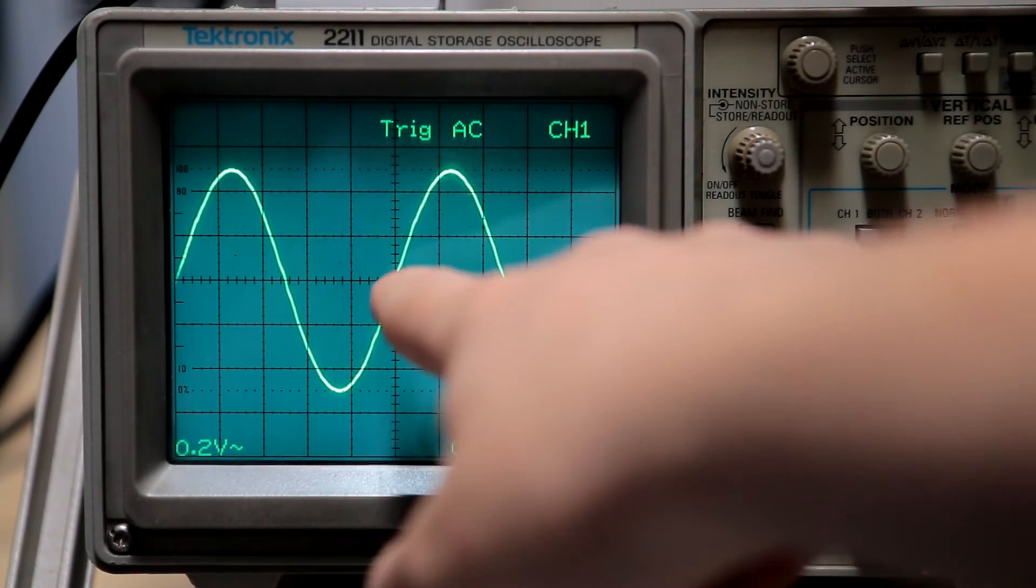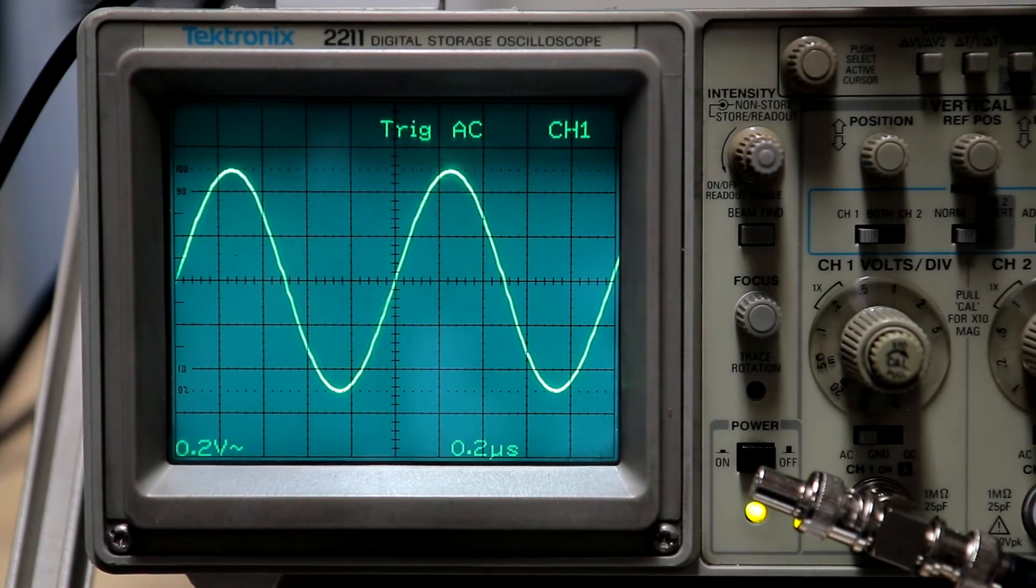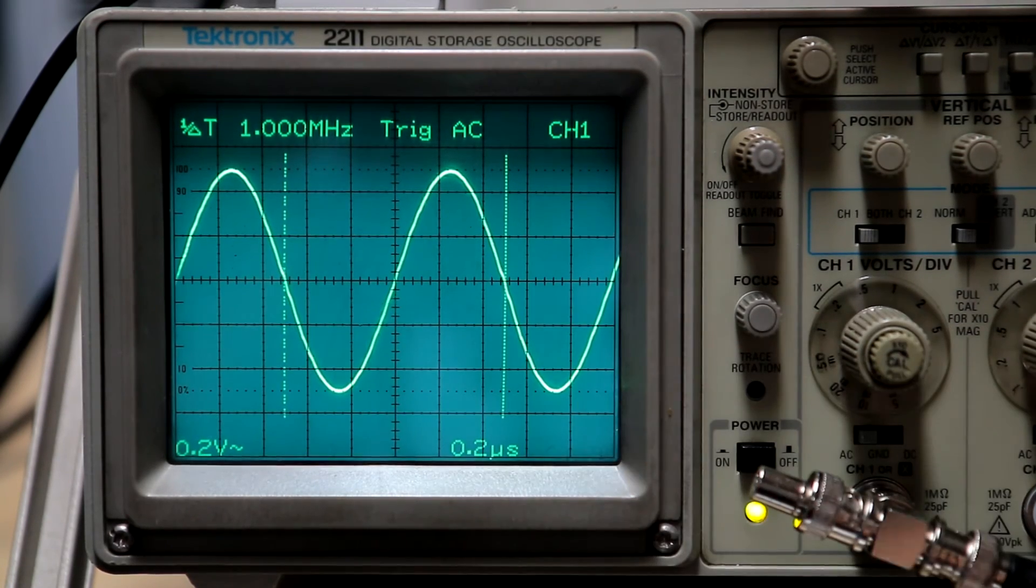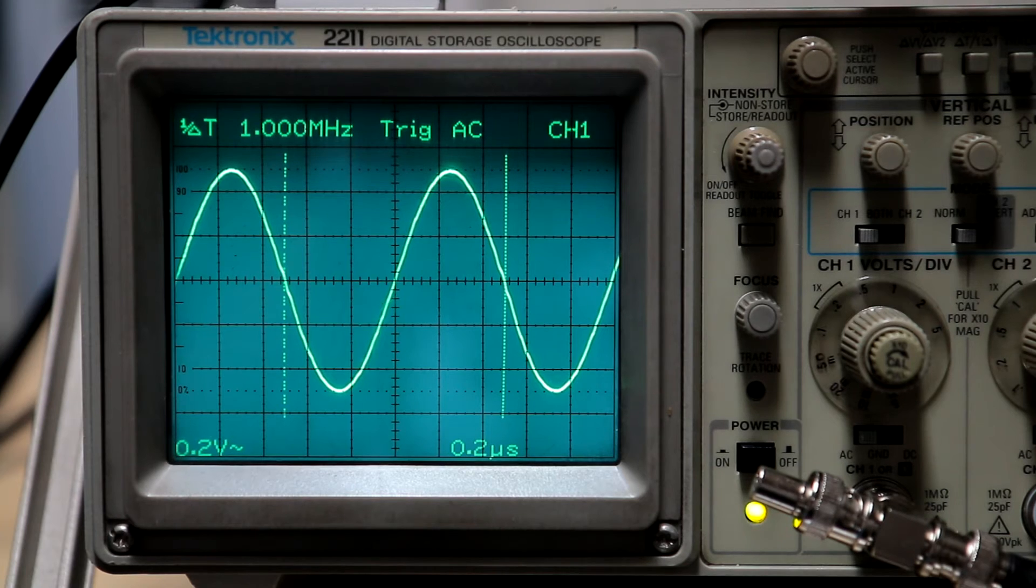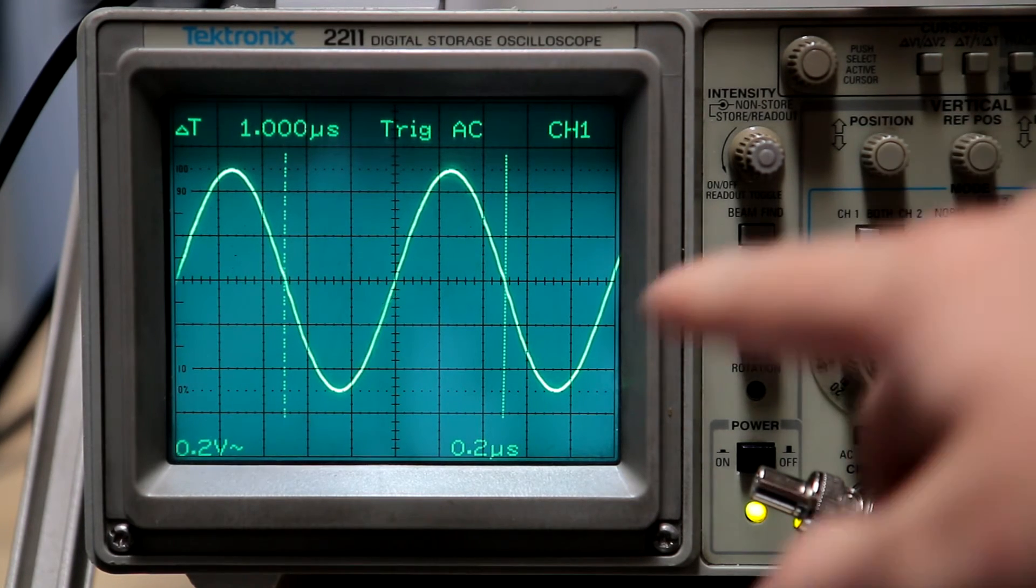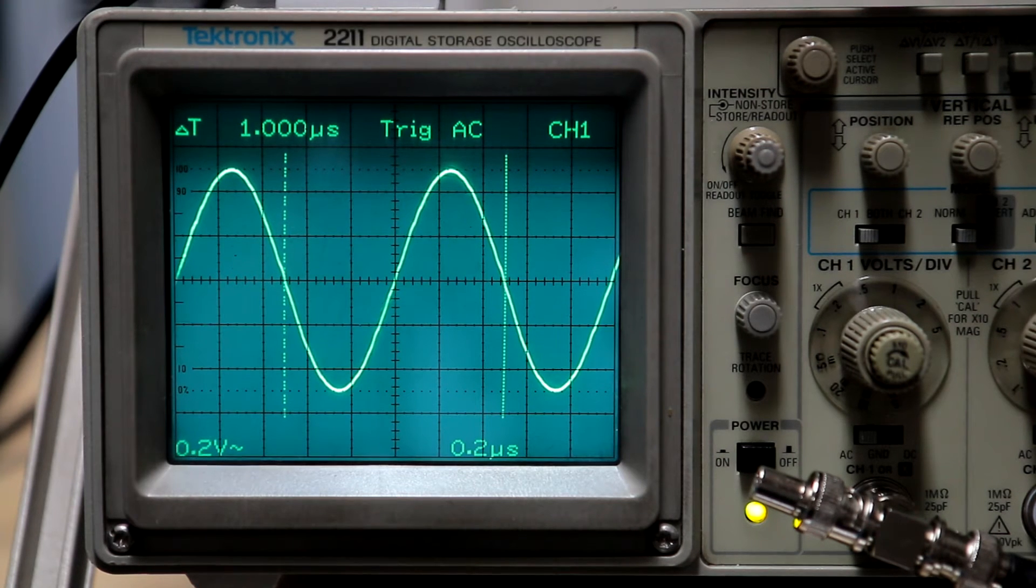Instead of, well you can still use the graticule, but you can switch the cursor on. I've already set this up by the way. If you look at that, bang on 1 megahertz. Obviously we press that again, we can get the period which is 1 microsecond.